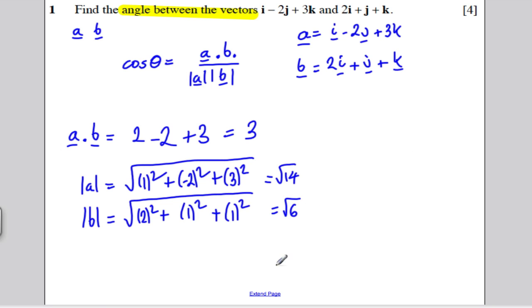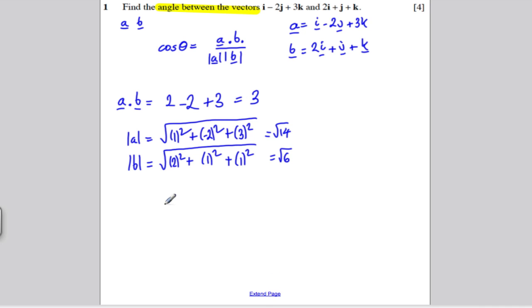And you're pretty much done now. Very easy, just plugging into the formula. Cos theta is therefore equal to 3 divided by the square root of 14 times the square root of 6. So theta is the inverse cos of 3 over root 14 root 6. Simple as that.